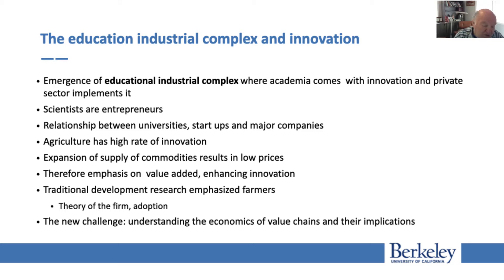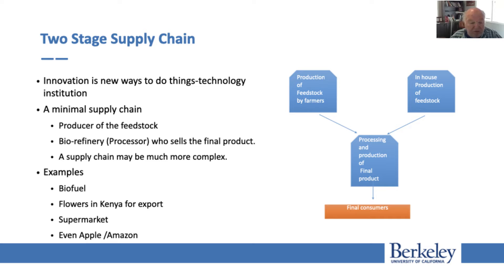To understand how the system works, we use a simple two-stage supply chain. This supply chain includes two elements: input production — or what we call feedstock production — which can be done either by farmers or within a company, and processing. So we have a company that owns the supply chain; they can either buy feedstock from others, such as farmers, or produce it themselves through vertical integration. The supply chain includes producers of feedstock, a biorefinery that refines it, and then you sell it.